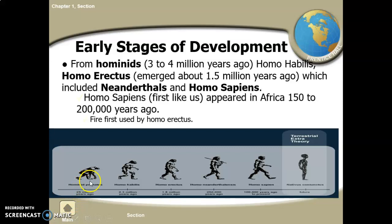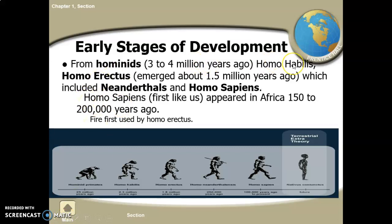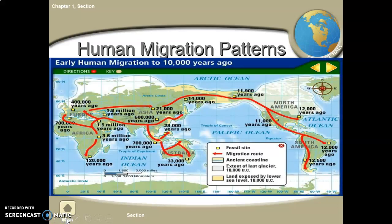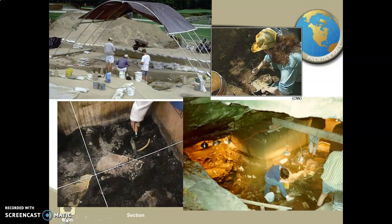We started with Australopithecines. Homo habilis is the first — habilis means 'man of skill' because he created stone tools. Homo erectus is the first to walk upright with no slump. Neanderthals were mainly found in the northern hemisphere. Homo sapiens — that's us — appear about 150,000 years ago.